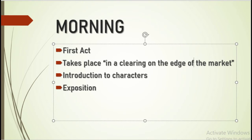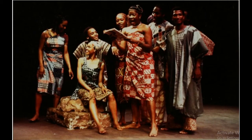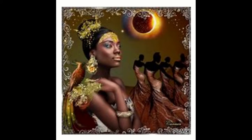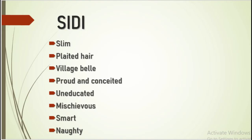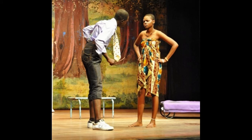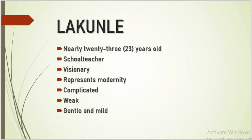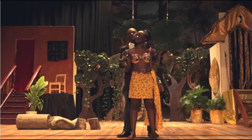The action in the Morning takes place at a clearing on the edge of the market. This act introduces us to the main characters of the play. We are first introduced to Sidi, a slim girl with plaited hair — in Soyinka's words, she's a true village belle. Sidi is shortly joined on stage by the nearly 23-year-old Lakunle, who is dressed in an old-style English suit. From their conversation, Lakunle's anti-traditional sentiments are exposed along with his love for Sidi. Sidi provides the condition necessary for their marriage — that Lakunle pays her bride price in full. Lakunle's disregard for culture and his decision to forgo the payment of her bride price is the stumbling block in their relationship.